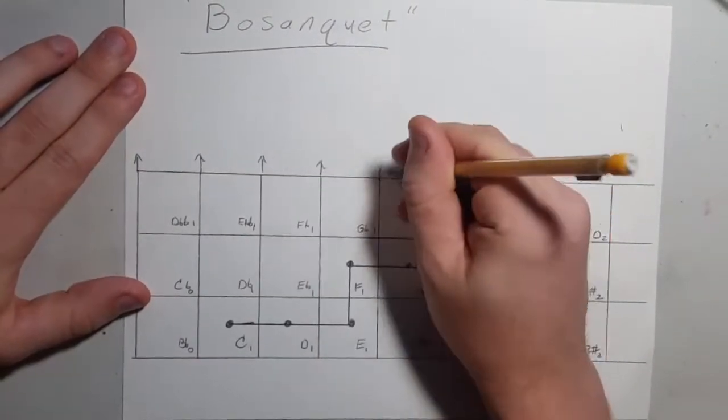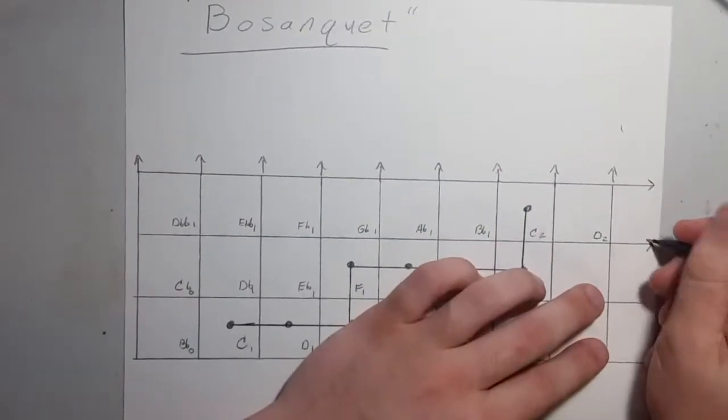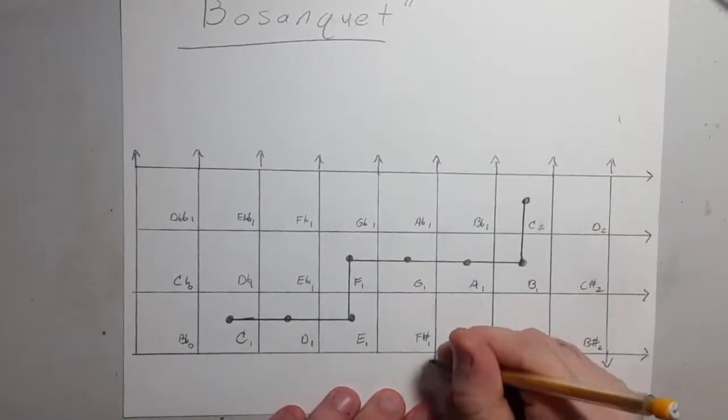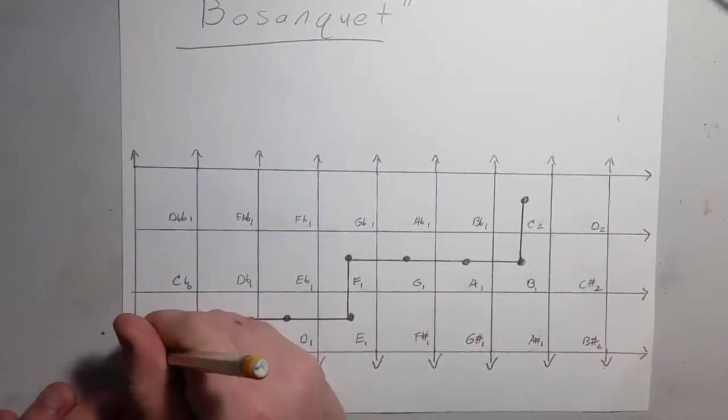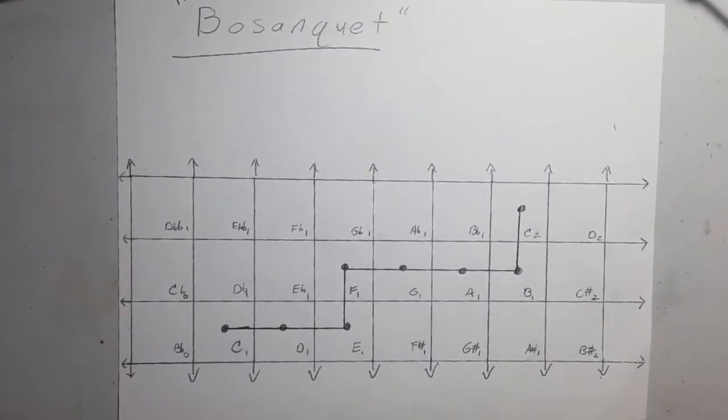Also notice how the fingerings on interfaces like these remain consistent regardless of how many notes of a tuning one uses, because including more or less notes merely adds them to or removes them from the edges of the interface, instead of squeezing them in between others, as would happen on, say, a piano or a guitar fretboard.